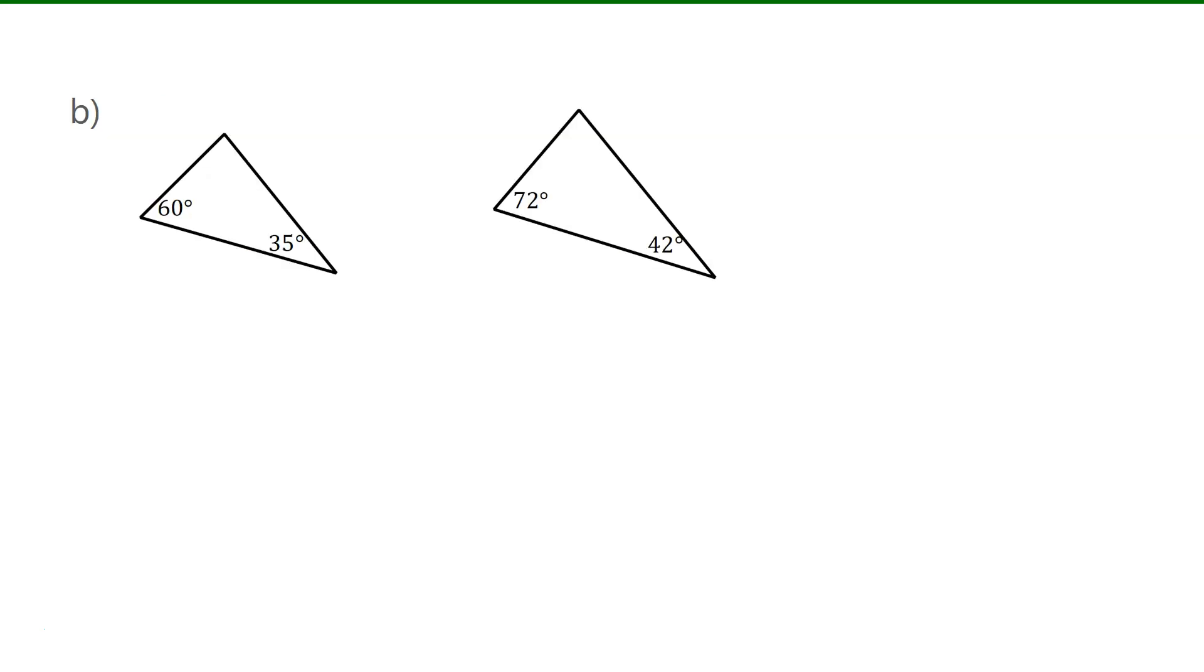Now for the last one, we can just look at this right away and say that they are not similar, because the corresponding angles are not equal. 60 and 72 are not equal, and 35 and 42 are not equal. So we can say, no, since corresponding angles are not equal.